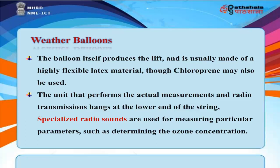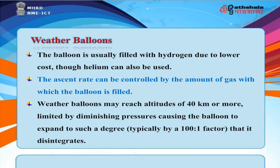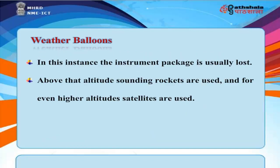The weather balloon produces lift and is usually made of highly flexible latex material, though chloroprene may also be used. The unit performing actual measurements and radio transmissions hangs at the lower end of the string. The balloon is usually filled with hydrogen due to lower cost, though helium can also be used, and the ascent rate is controlled by the amount of gas. Weather balloons may reach altitudes of 40 kilometers or more, limited by diminishing pressure causing the balloon to expand by a factor of 100 to 1 until it disintegrates. Above that altitude, sounding rockets are used; for even higher altitudes, satellites are used.